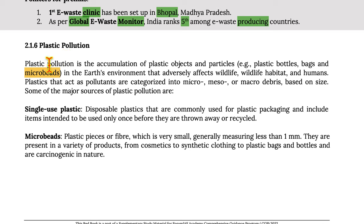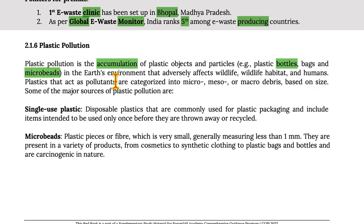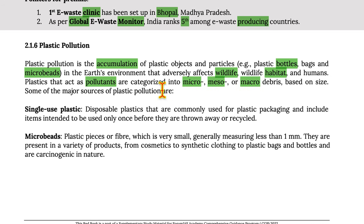Moving on to plastic pollution — plastic pollution is the accumulation of plastic objects and particles, e.g. plastic bottles, bags, and microbeads, in earth's environment, adversely affecting wildlife, wildlife habitats, and humans. Plastics that act as pollutants are categorized into micro, meso, and macro debris based on their size.